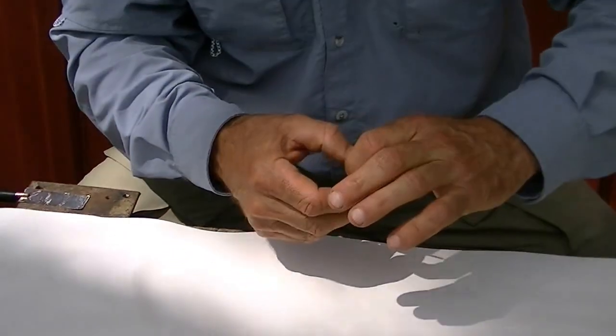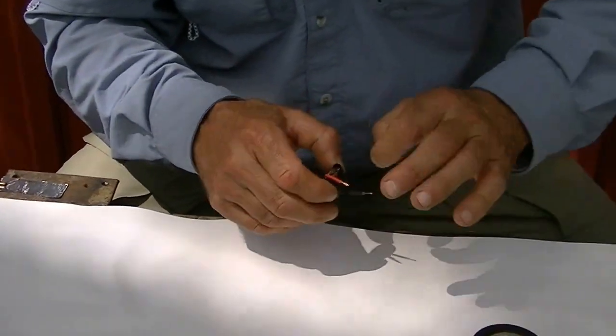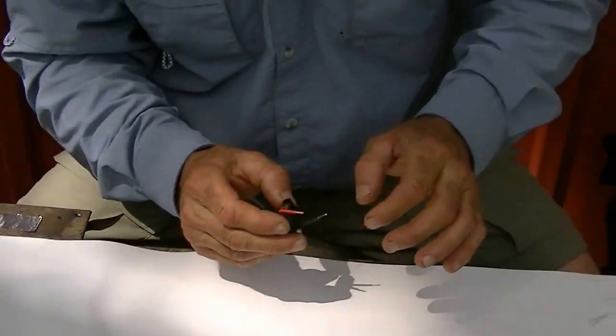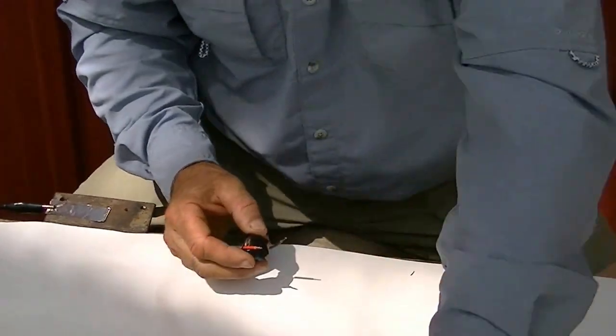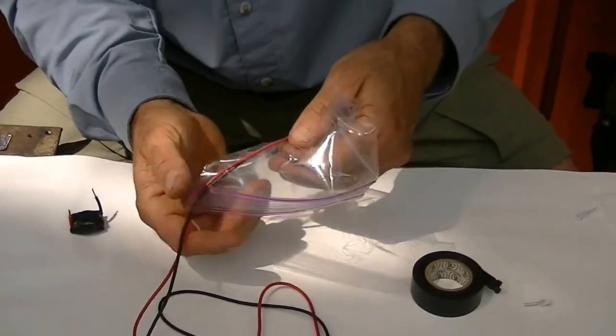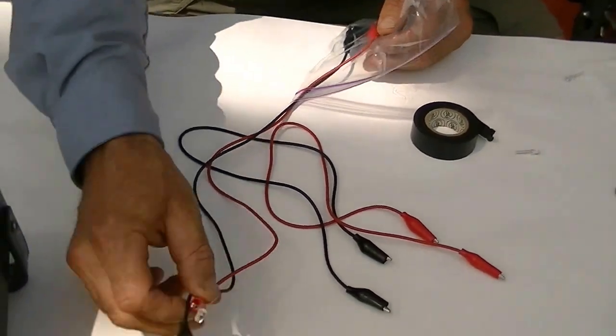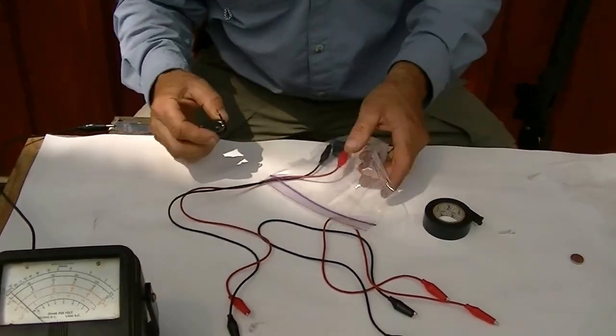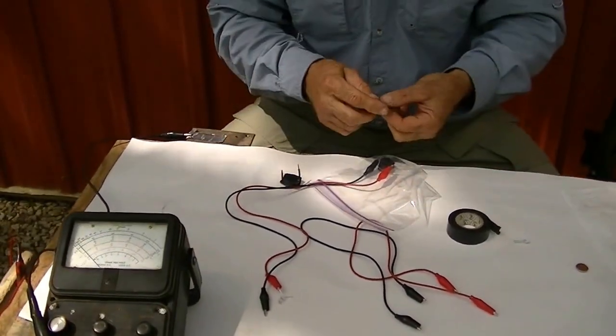And you kind of want to keep the cardboard wet. Not soaking wet, but just a little bit wet. And here's one we made earlier. I put it in a ziplock bag to keep it moist. And we're going to go inside and show you it working the diode.